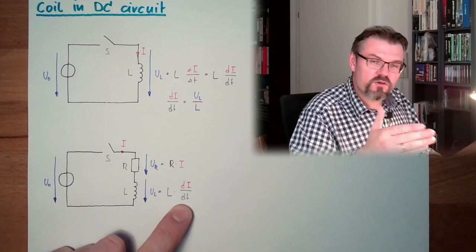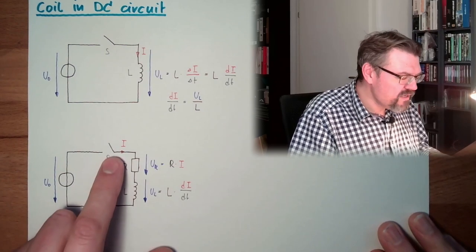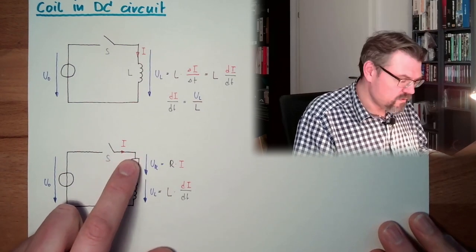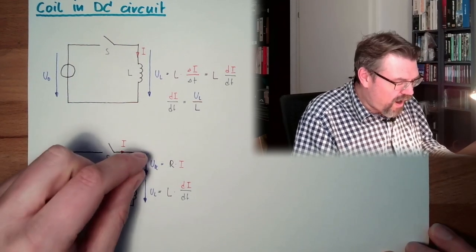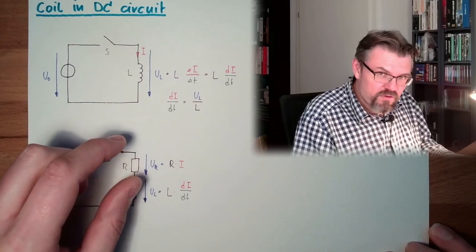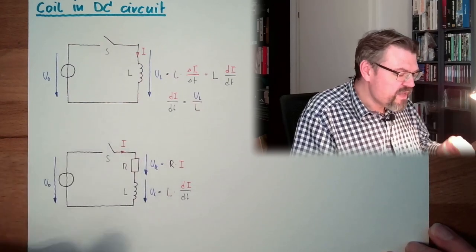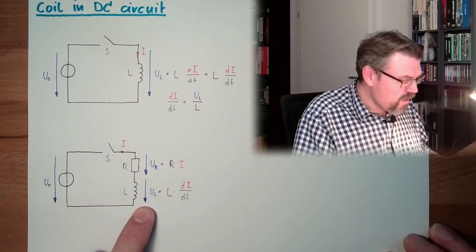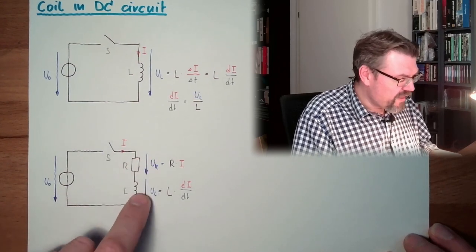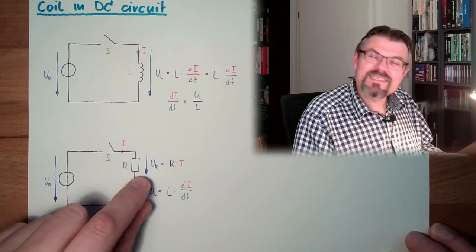As soon as the current is growing, we will receive a voltage at the resistance. So the UR is a little bit bigger than before. Before it was zero. And then it's now a little bit bigger. If UR is a little bit bigger, UL must be a little bit smaller. Because all two together must be U zero. And U zero is constant. So if now UL is a little bit smaller, the change rate of the current is a little bit smaller.